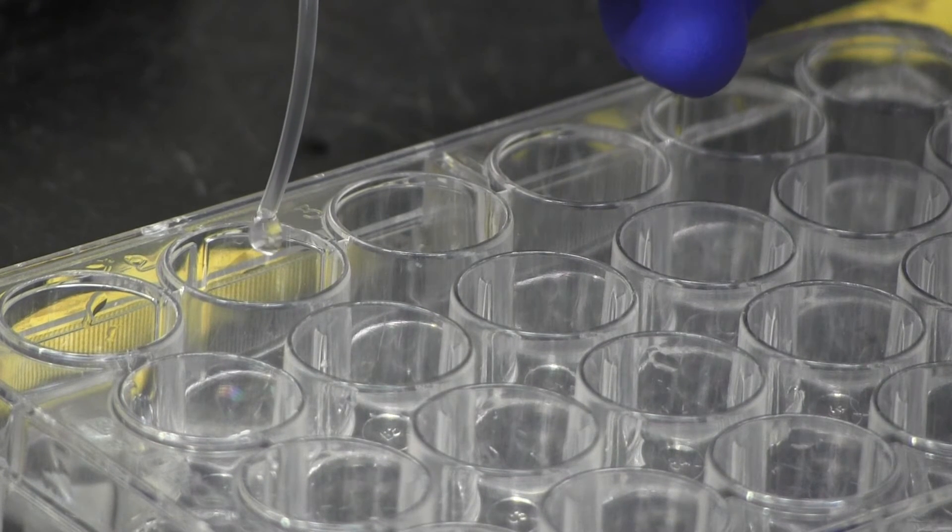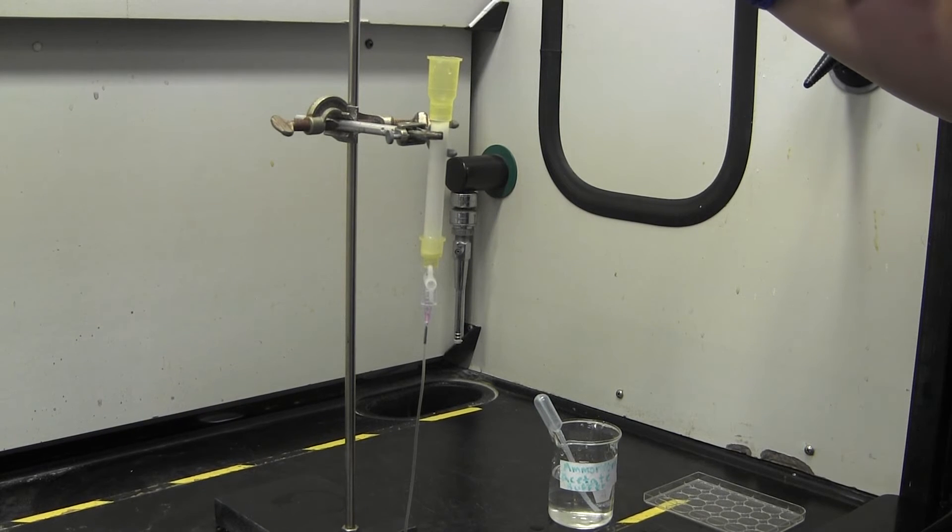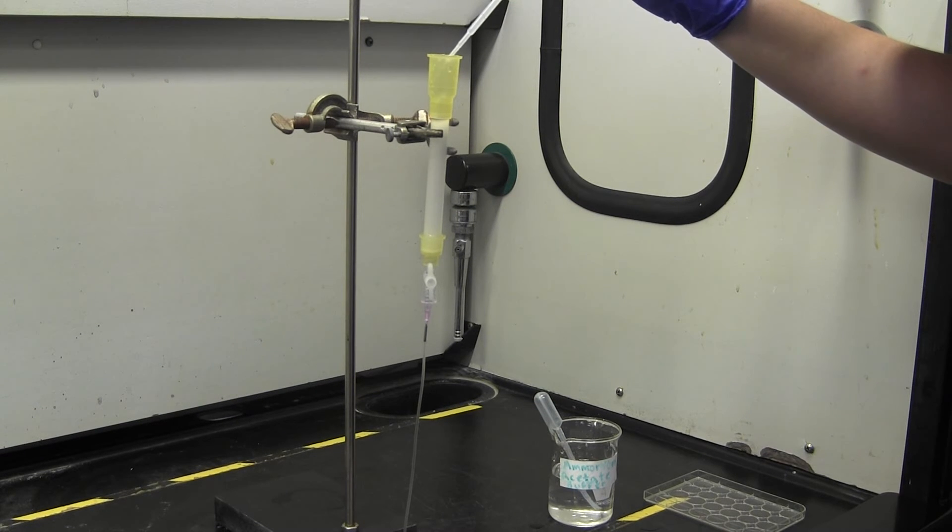Once you have collected 20 fractions, run another 10 milliliters of buffer through the column to clean it. You do not need to save this.